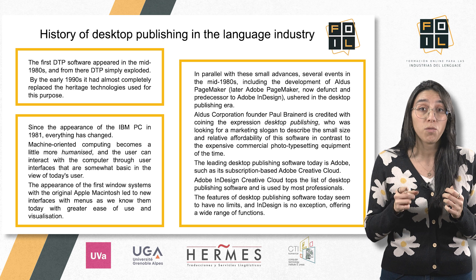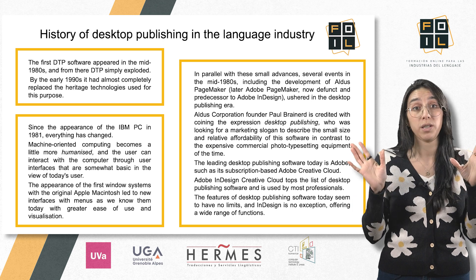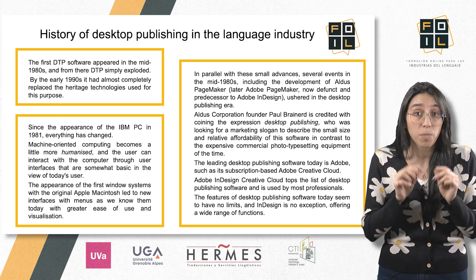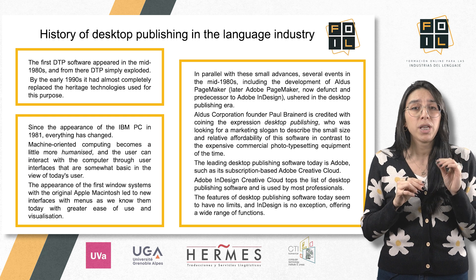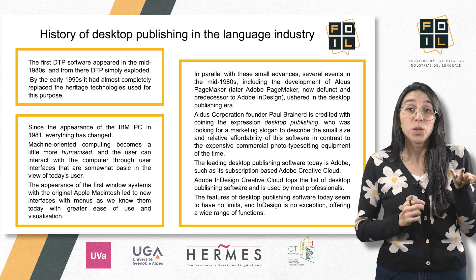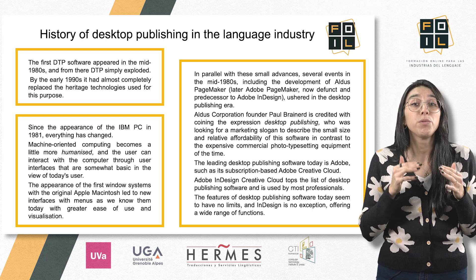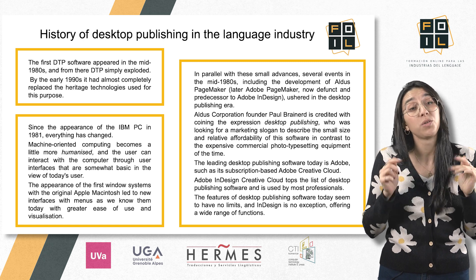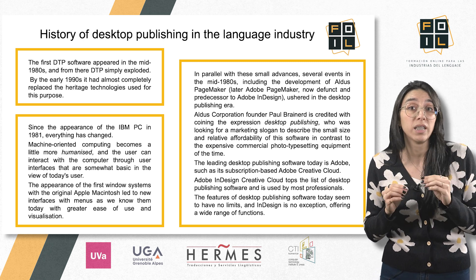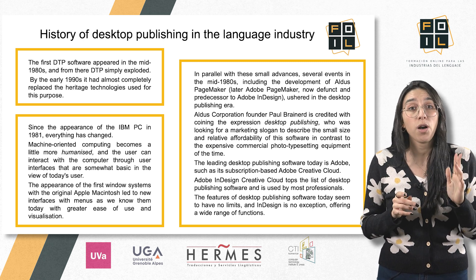The first desktop publishing software appeared in the mid-1980s, and from there, desktop publishing simply exploded. In the early 1990s, it had almost completely replaced the legacy technologies used for this purpose. Since the appearance of the IBM personal computer in 1981, everything has changed. Machine-oriented computing became a little more humanised, and the user could interact with the computer through user interfaces that were somewhat basic by today's standards. The appearance of the first Windows system with the original Apple Macintosh led to new interfaces with menus as we know them today, with greater ease of use and visualisation.